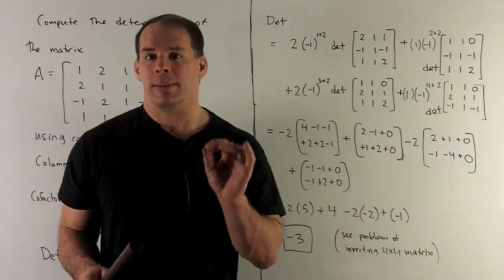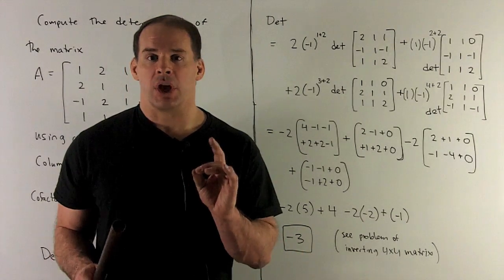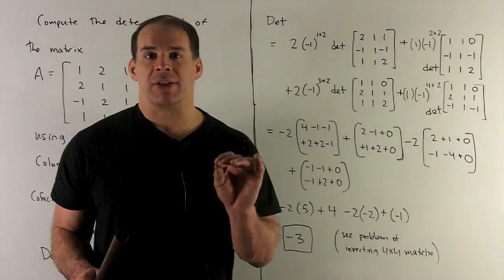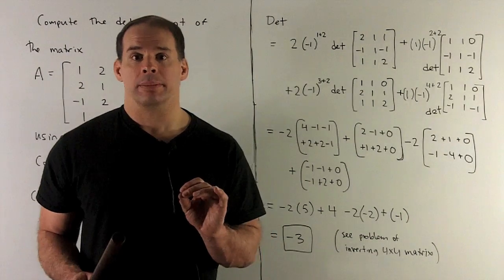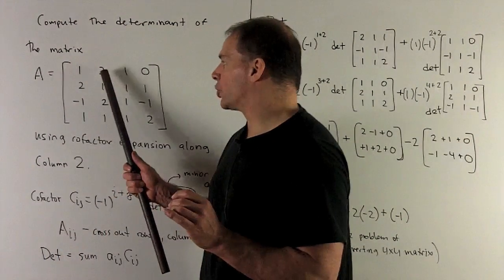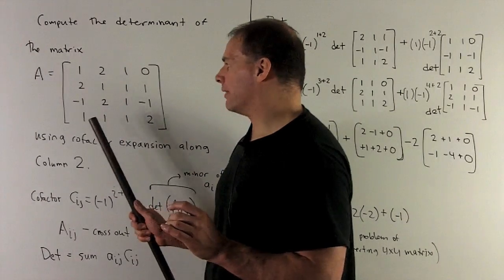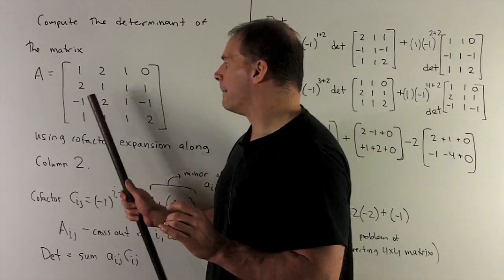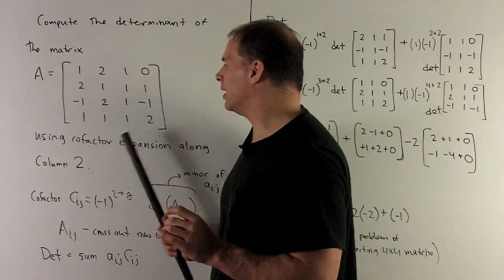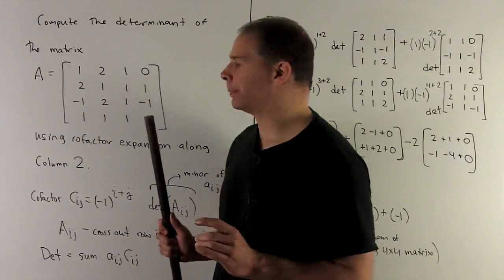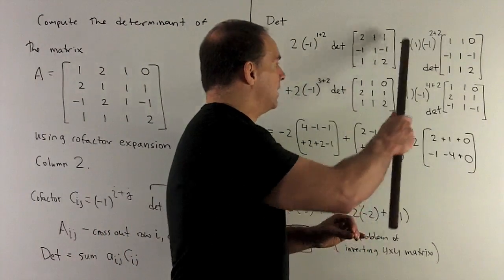All I have to worry about now are the minors. So, this is going to be crossing out the right row and column. For this entry, cross out that row, that column. I'm left with 2, 1, 1. Minus 1, 1, minus 1. And 1, 1, 2. Okay. Then, we take the determinant.